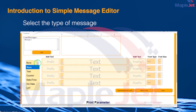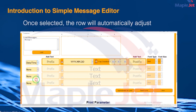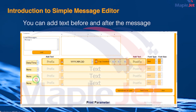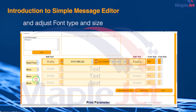Select the type of message. Once selected, the row will automatically adjust. You can add text before and after the message and adjust font type and size.